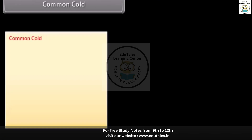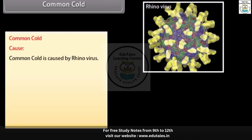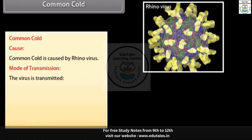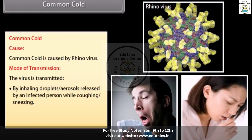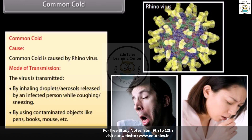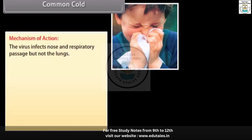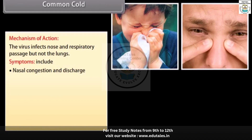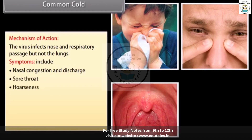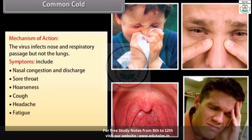Common cold is caused by rhinovirus. The virus is transmitted by inhaling droplets or aerosols released by an infected person while coughing or sneezing, or by using contaminated objects like pens, books, mouse, etc. The virus infects the nose and respiratory passage but not the lungs. Symptoms include nasal congestion and discharge, sore throat, hoarseness, cough, headache, and fatigue. Symptoms usually last for 3 to 7 days.